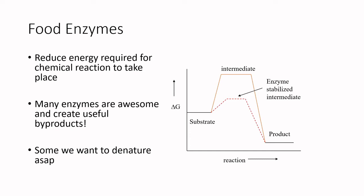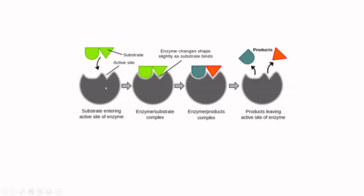In enzyme-stabilized reactions, we are reducing the amount of energy necessary for that reaction to occur, thereby making it easier for the reaction to happen. Lots of enzymes are beneficial, but lots of enzymes we want to denature. An enzyme takes a substrate — the core molecules that need to be modified — and has a binding site or active site that holds that substrate, and that holding is what allows for the reduced energy of the chemical reaction.